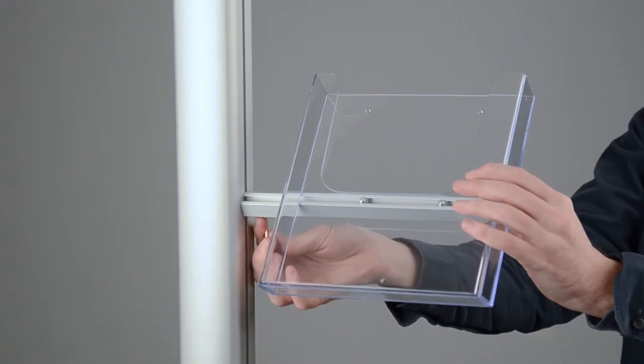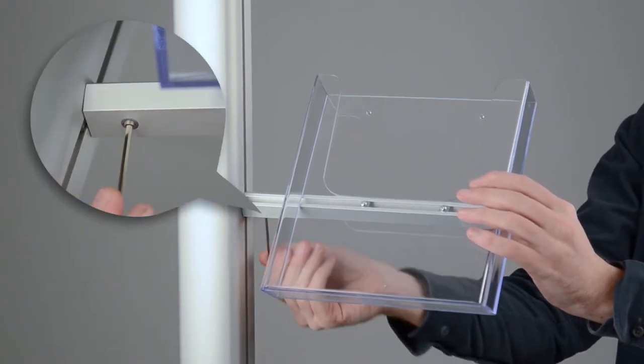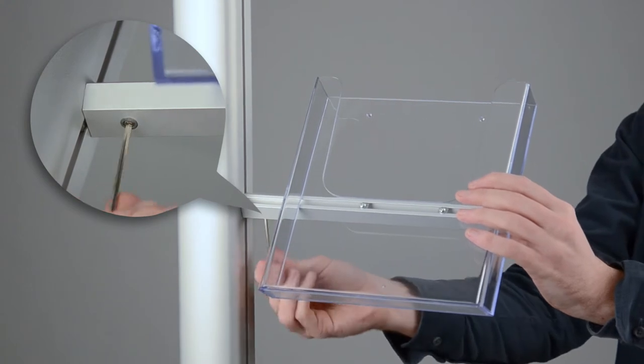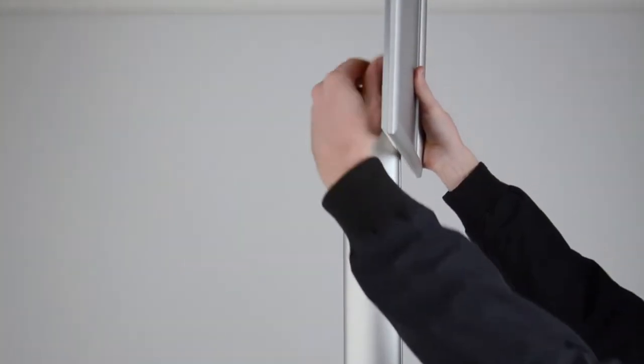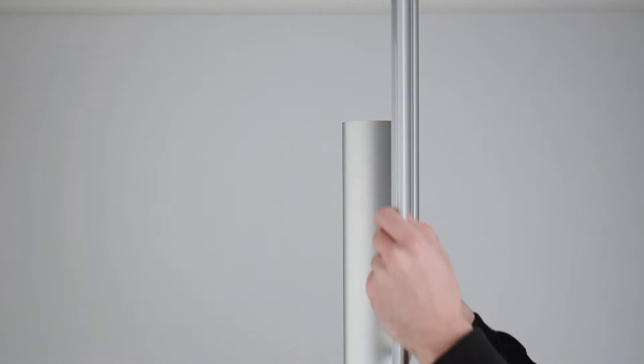This revolutionary display system allows you to adjust the height of the accessory by simply loosening the grub screw. This allows the unit to slide freely in the channel on the front of the pole.